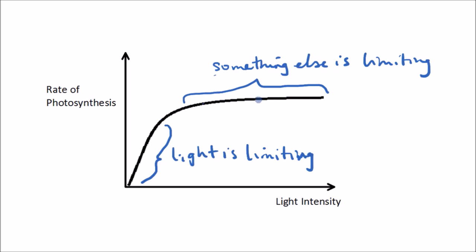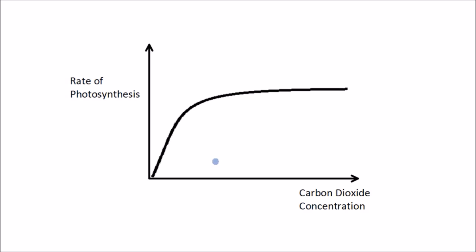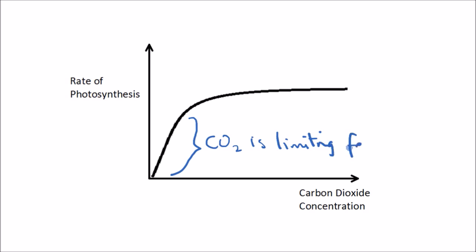The same sort of pattern appears on the carbon dioxide graph. Carbon dioxide concentration increases along the x-axis, and we have rate of photosynthesis on the y-axis as before. As we start to increase the carbon dioxide concentration, the rate of photosynthesis increases — up until that point, carbon dioxide is the limiting factor.